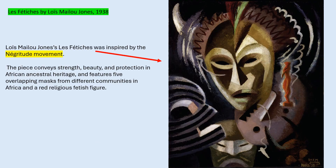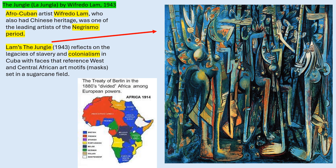Here we have one of the required images. For the AP framework, it says this piece conveys strength, beauty, and protection, and it mentions that there are five overlapping masks. Another image in the AP framework mentions the Afro-Cuban — a term we already addressed — as one of the leading artists of the Negritude movement. This is his piece, 'The Jungle,' which reflects on the legacies of slavery and colonialism.